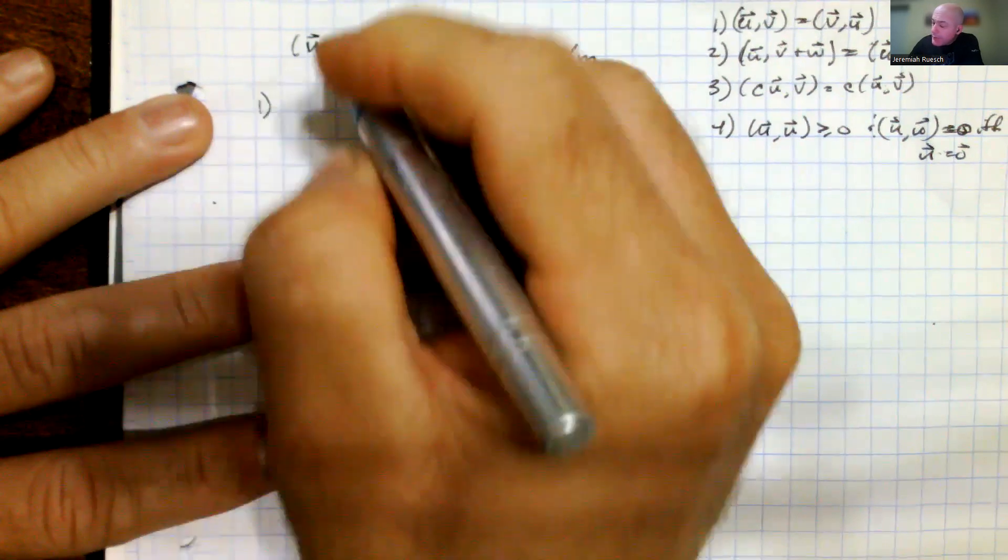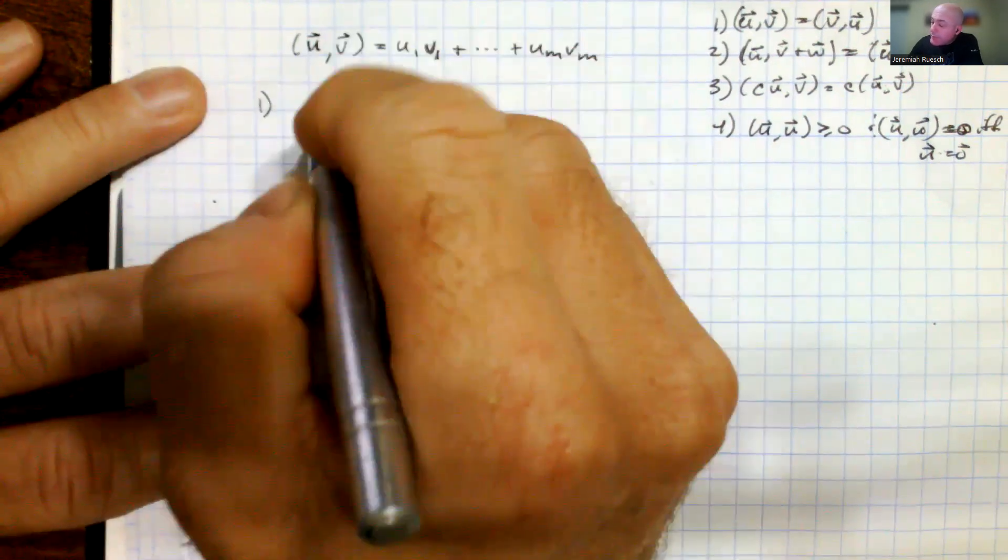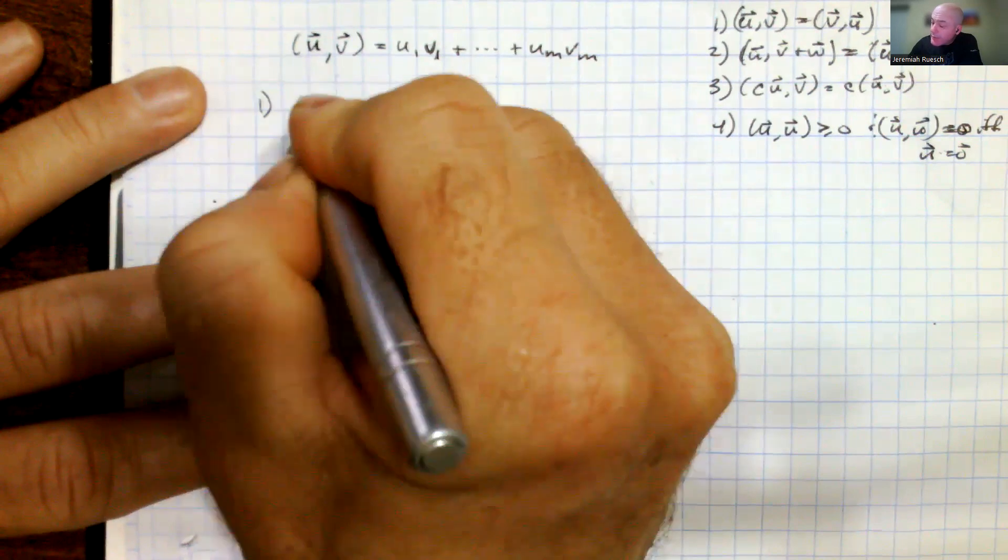All right, so first one, we're going to let u and v be from the space with this norm. So we have to show that this is the case.